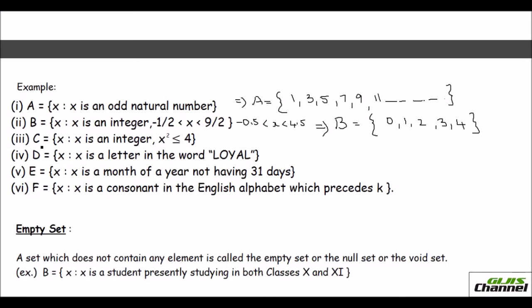Now look at the third one. Set C where X is an integer and X square should be less than or equal to 4. It is an integer, so it can be both positive and negative. But when you square the value should be less than or equal to 4. So I can write set C as negative 2, negative 1, 0, 1 and 2. Anything beyond this will give you a value more than 4 when squared.